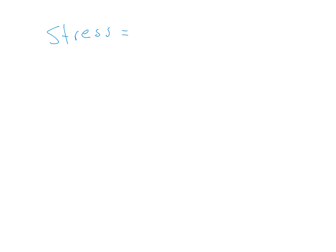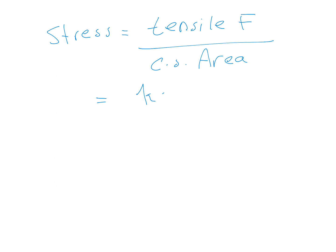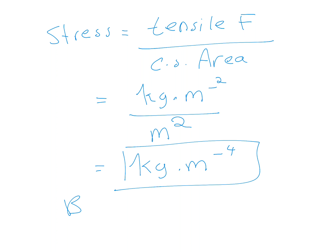Stress is equal to tensile force over cross-sectional area. Again, force is kg m⁻² (mass multiplied by acceleration) and area is m². So we get kg m⁻⁴, which is the same as pressure. Therefore B is not the answer either.